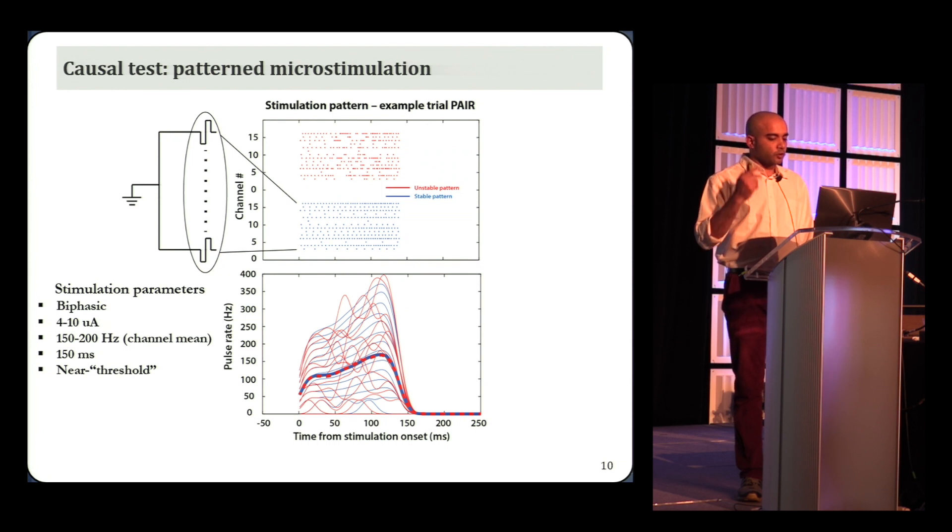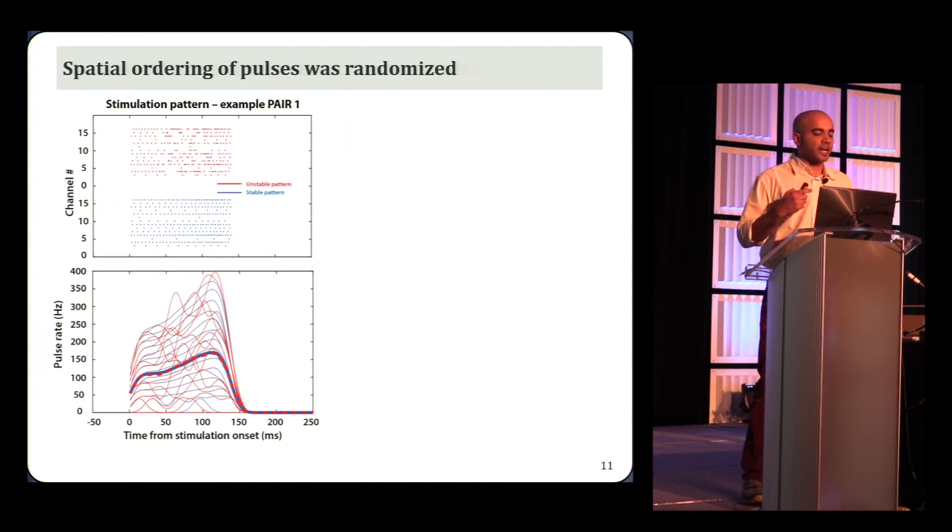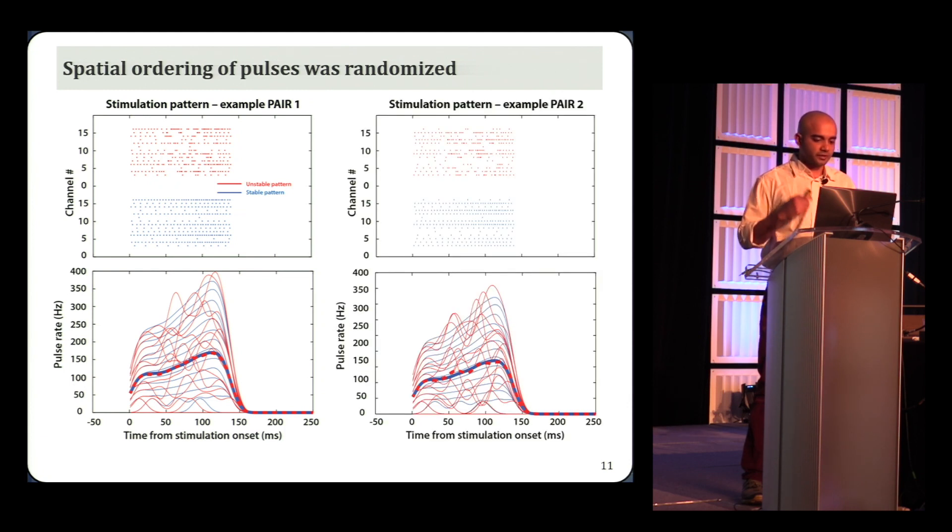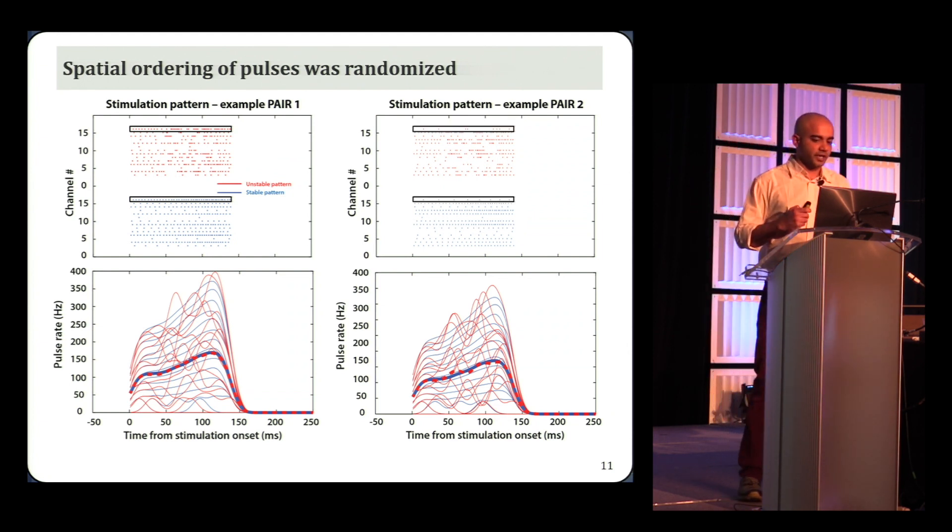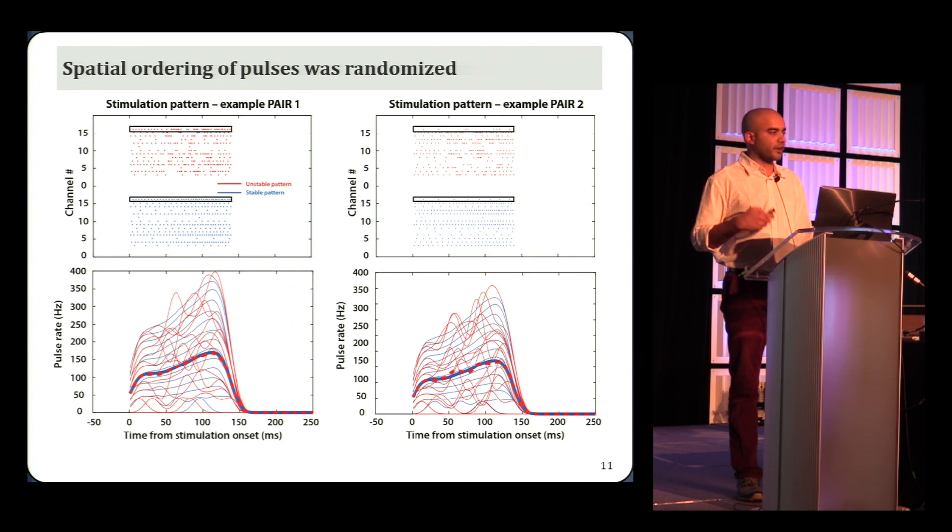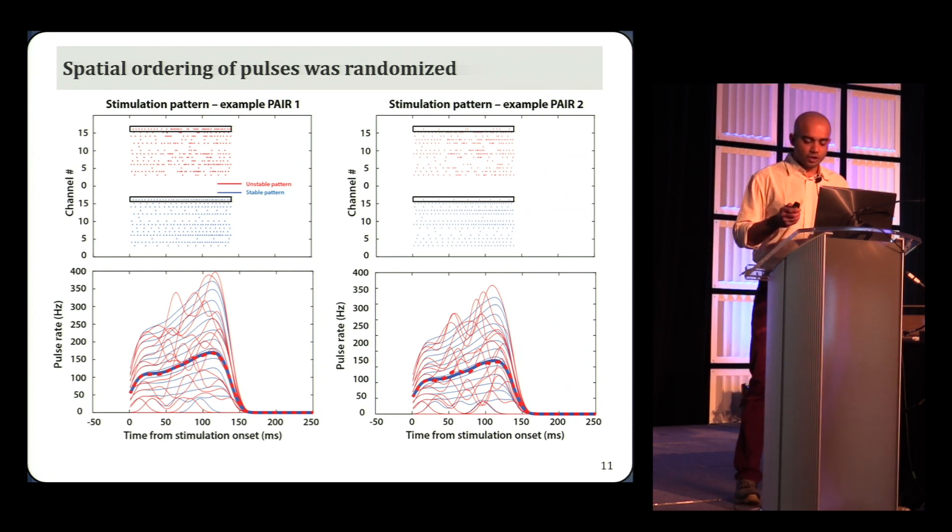So these two patterns were used to stimulate on two different trials. So one trial got the stable pattern, and the other got the corresponding unstable pattern. For different pairs, we also randomized the channel-specific frequency assignments. So another pair of patterns may look something like this. In the first pair, the first channel has a high pulse rate, but it's low in the second pair. So we did this over and over again, this randomization, and generated hundreds of stable and unstable pulse pattern pairs. This removed any systematic spatial structure in our simulation patterns. So we've controlled for channel pulse counts, mean rates, and spatial organization, and isolated the difference between these two sets of patterns to temporal stability. If temporal structure plays a role in movement generation, we should see a difference in the behavior when applying these patterns.